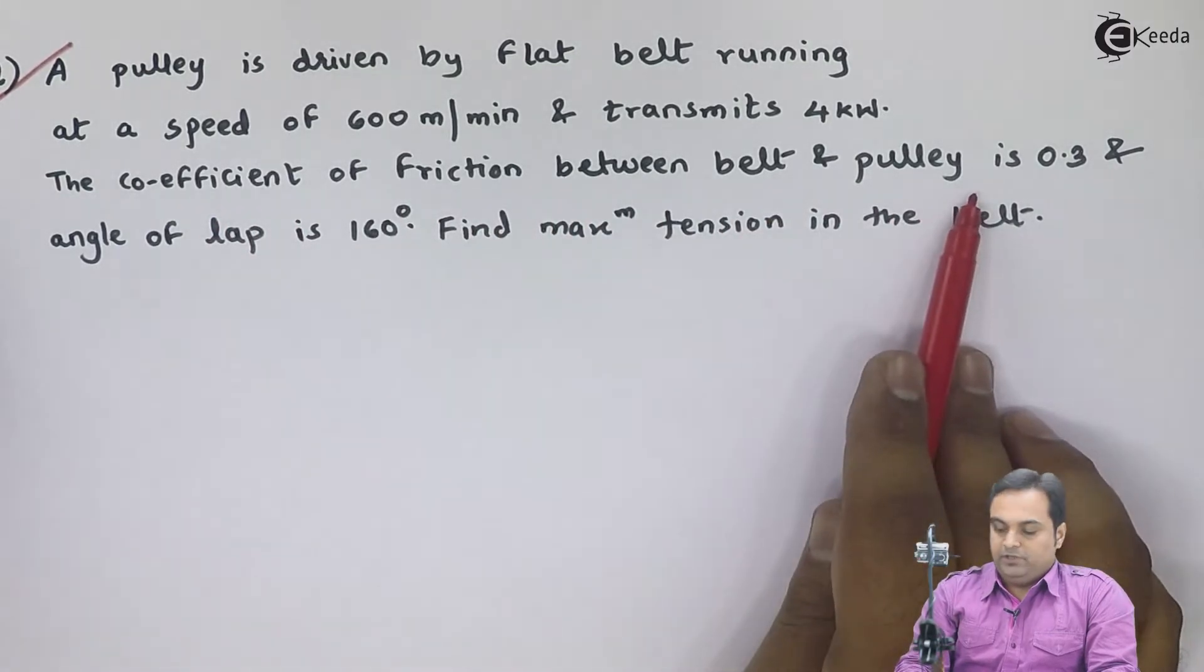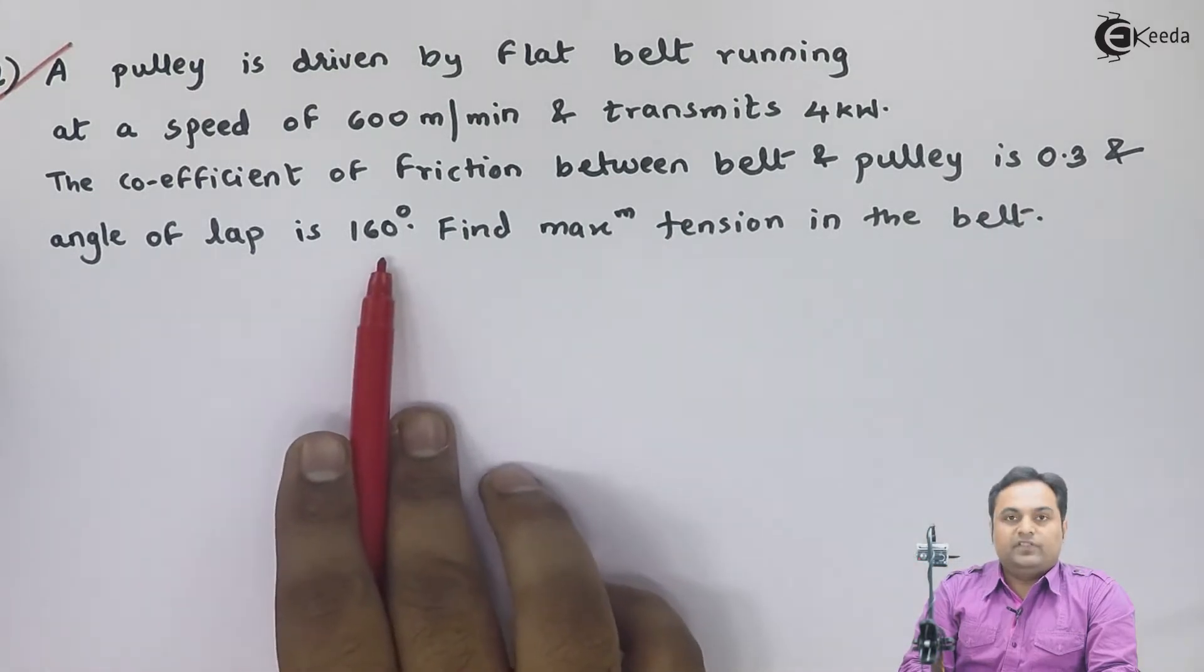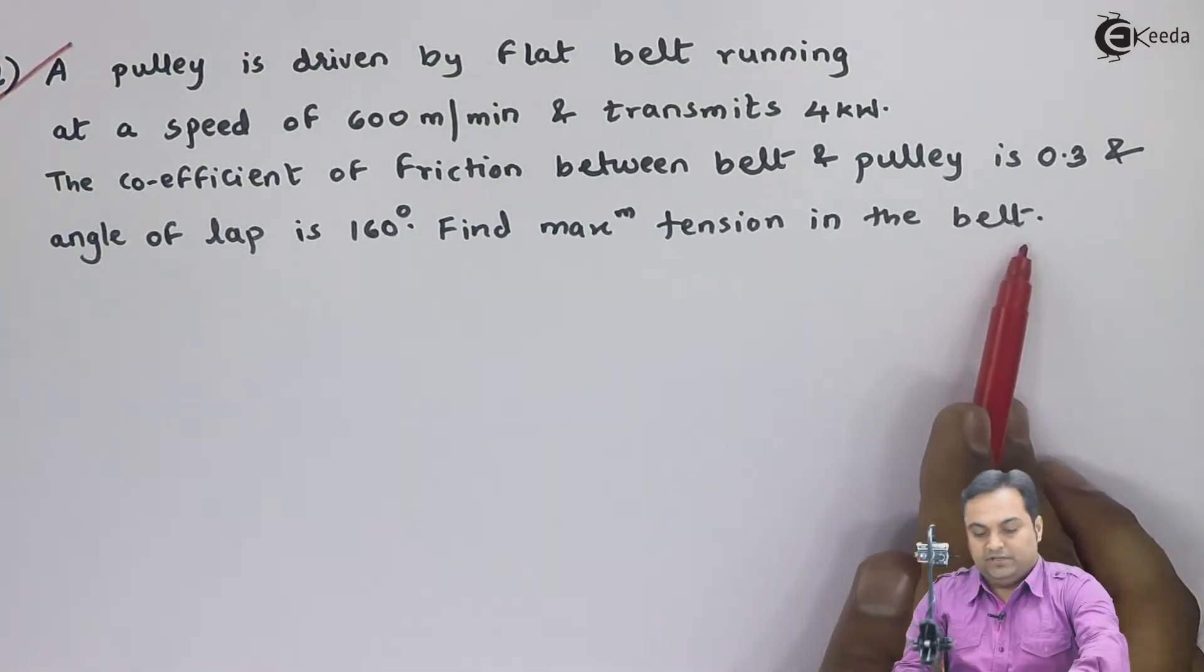The coefficient of friction between belt and pulley is 0.3 and angle of lap is 160 degrees. Find maximum tension in the belt.